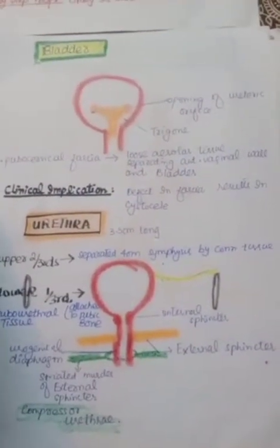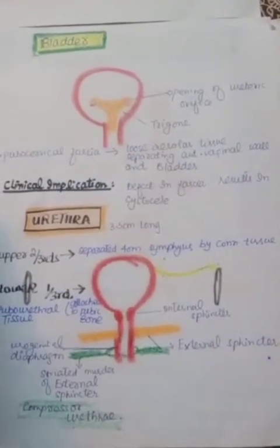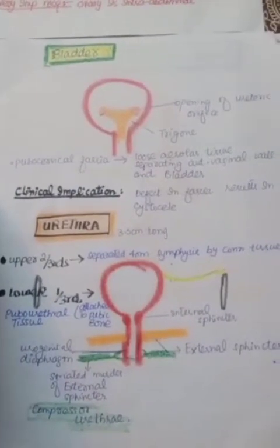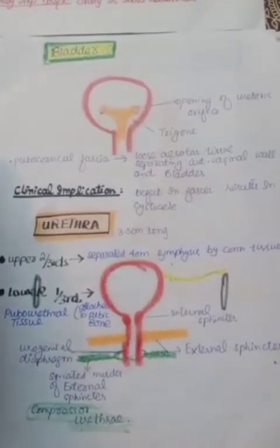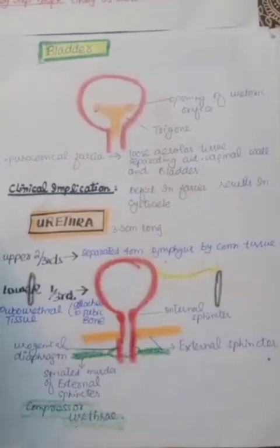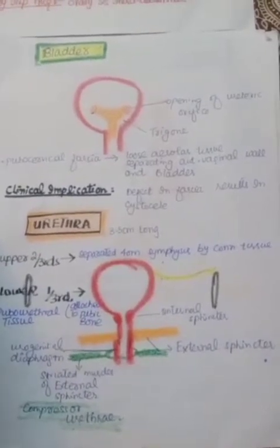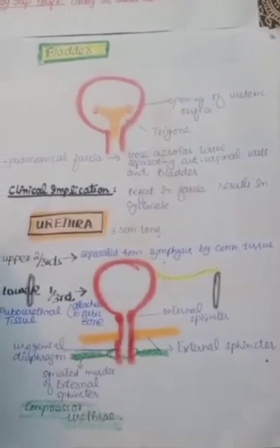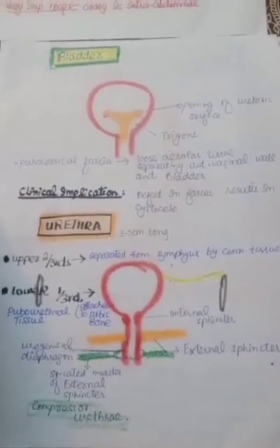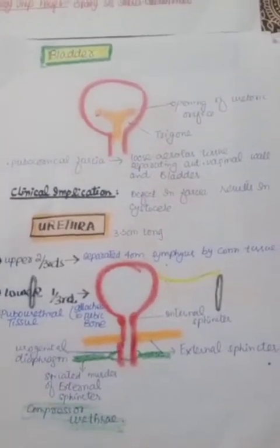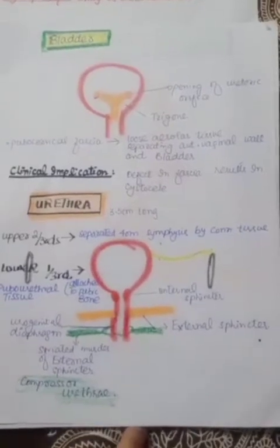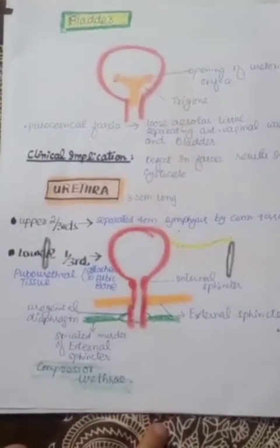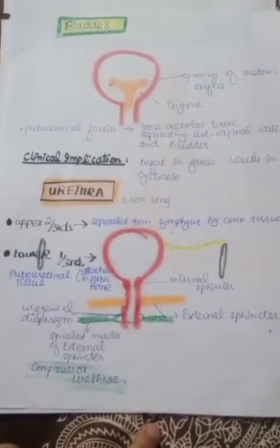The most important structure is the pubocervical fascia. This fascia is a loose areolar tissue that separates the anterior vaginal wall from the bladder. The clinical implication is that a defect in the pubocervical fascia results in cystocele.